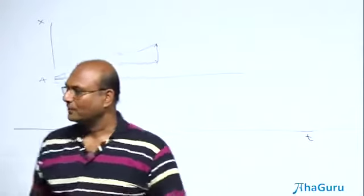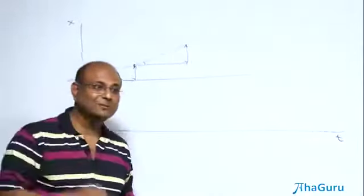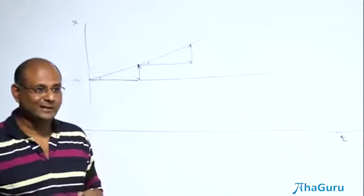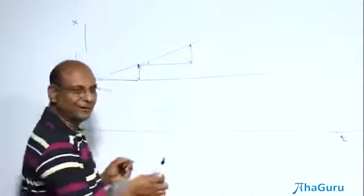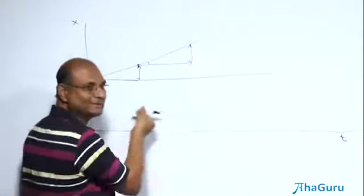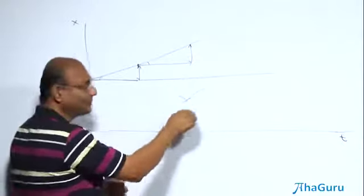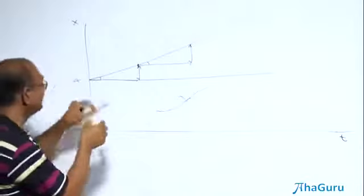You know that velocity is the slope. That means everywhere it must have the same slope. Why? Because it's uniform velocity. Now if I had a curve like this and said that this was uniform velocity, clearly the slope is changing. So this can't be. It is not possible.